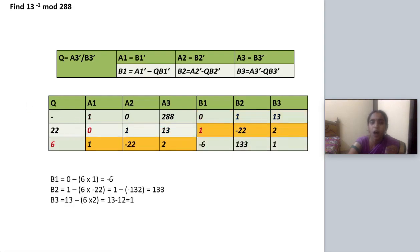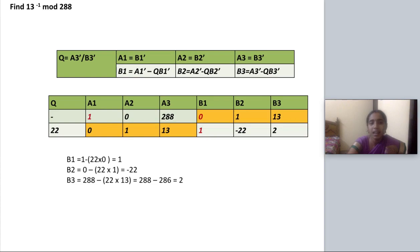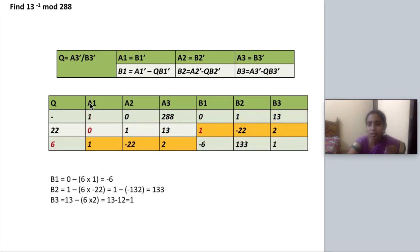Third step. So how long should I do this? Till in the B3 value I am getting 1, I have to repeat the steps. Once if I am getting 1, the value of B2 will be my answer. So I didn't get 1. So I am proceeding to another one iteration. Q value is A3 dash divided by B3 dash, 13 divided by 2, 6.